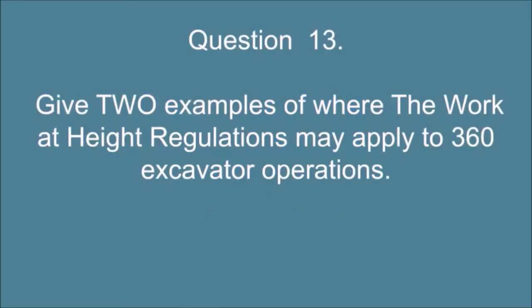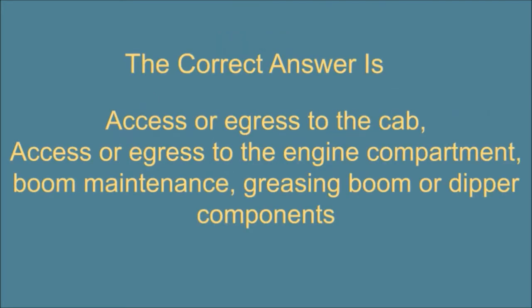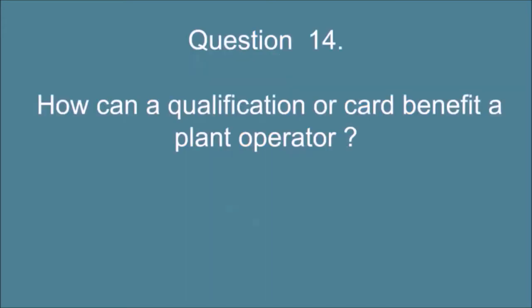Question 13. Give two examples of where the work-at-height regulations may apply to 360 excavator operations. The correct answer is: access or egress to the cab, access or egress to the engine compartment, boom maintenance, greasing boom, dipper components.